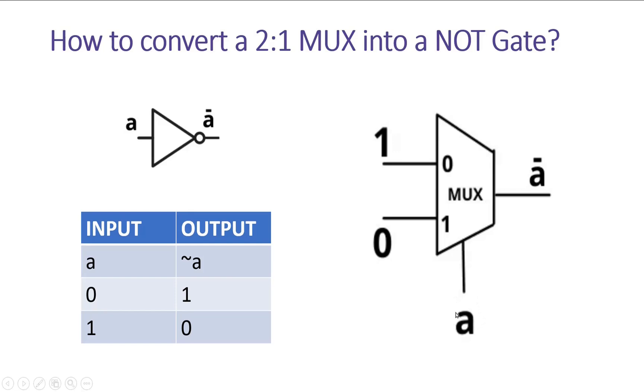Now when input a is 0, I know that I0 will be passed at the output. So what is the output? 1. So I will apply logic 1 here.